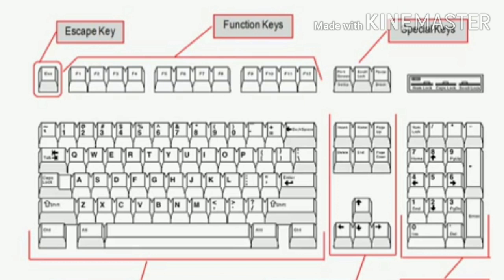There's a row of keys called function keys — we're not going to cover them today — but they're numbered F1 through F12. If you were using a computer at a point of sale in a store, you might assign specific functions to those keys, such as adding sales tax. It's going to be different for every setup, and it's for a later, more advanced course. There are also some specialized keys near the upper right, such as Print Screen, Scroll Lock, and Pause — we won't cover those today either because they're rarely used.